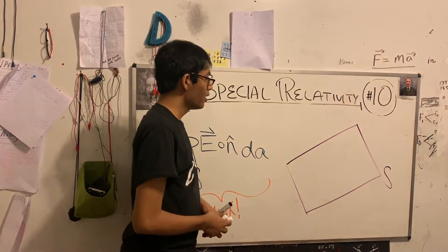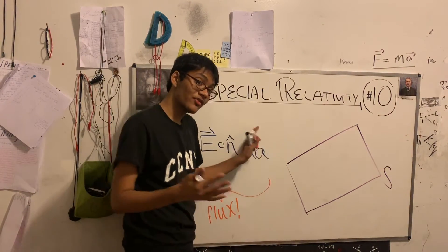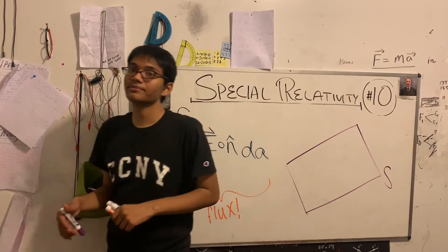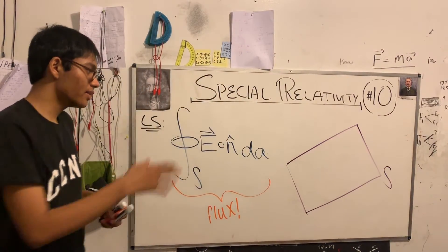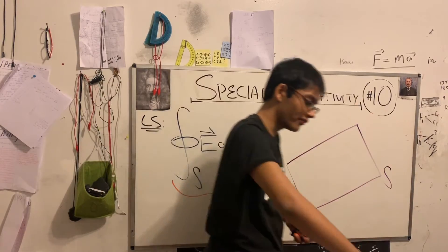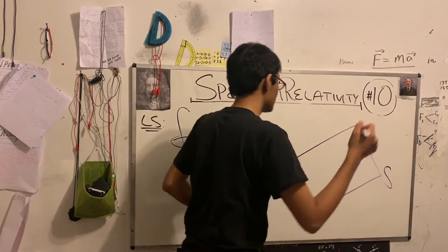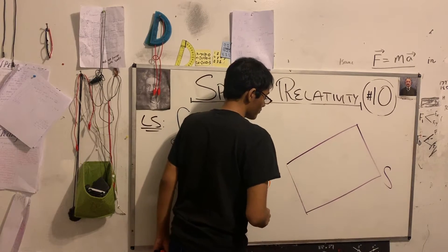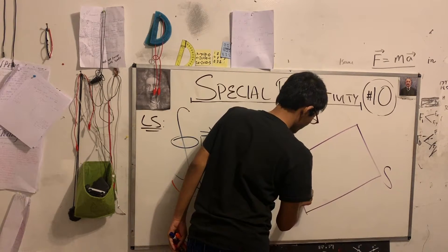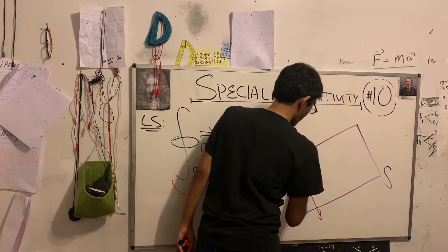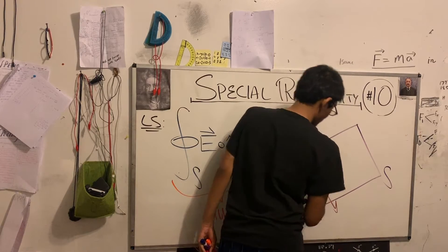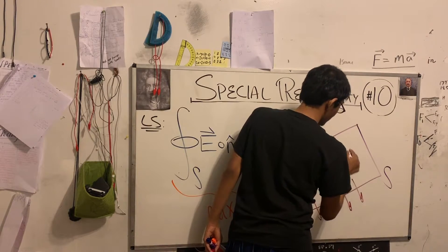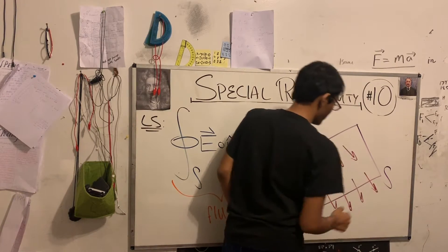Of course, the surface is going to be within an electric field — otherwise I'd have no interest in it. So I'm going to put the surface in an electric field by drawing some field vectors. Let's draw out some field lines penetrating the surface, and of course the field lines also just outside of the surface.